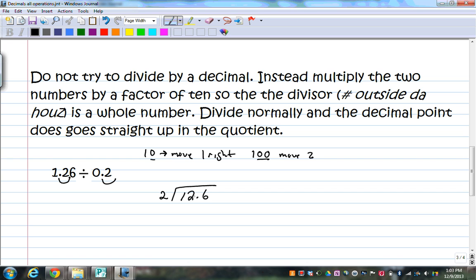Now what I have is 12.6 divided by 2. The decimal goes straight up into your answer. 2 goes into 12 six times, bring this 6 down, 2 goes into 6 three times, there is no remainder, we are done, and your answer is 6 and 3 tenths.